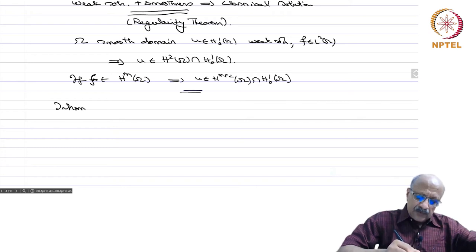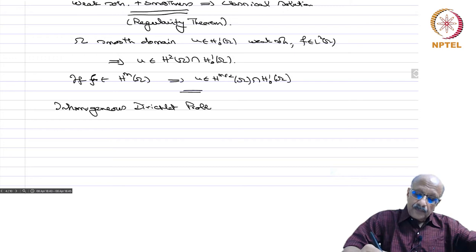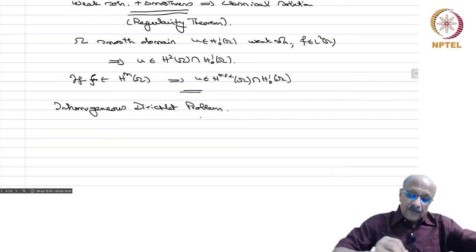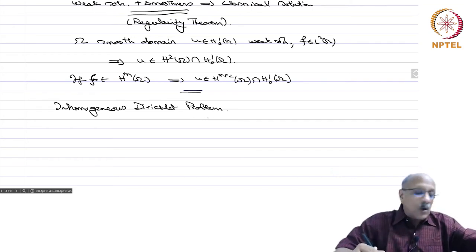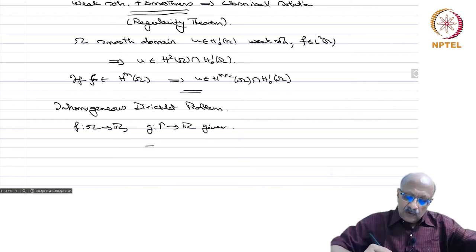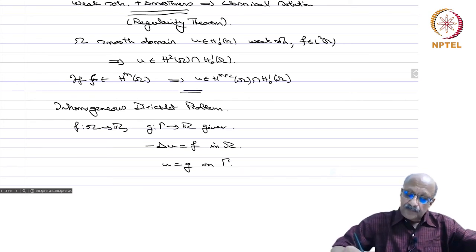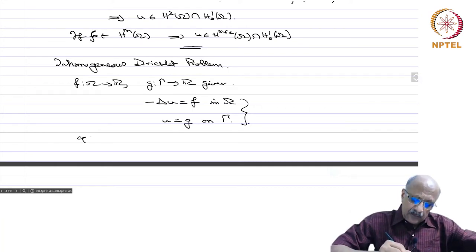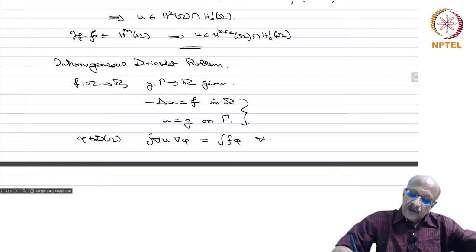Now let us look at the inhomogeneous Dirichlet problem. The Dirichlet problem means you are prescribing the value of the function on the boundary. Homogeneous means u equals 0 on the boundary; inhomogeneous means you have some other function. Given f from omega to R and g from gamma to R, we want to look at the problem: minus Laplacian u equals f in omega, and u equals g on gamma.